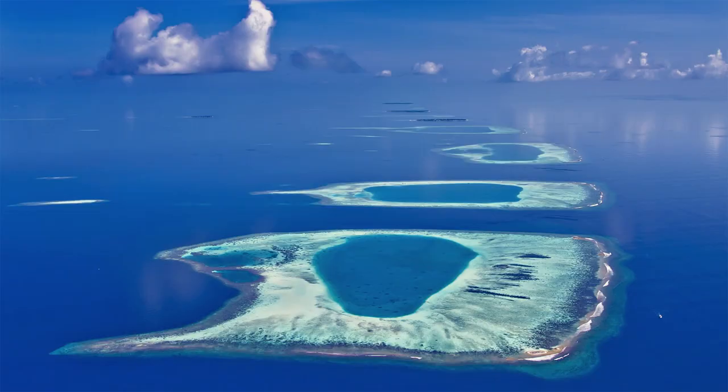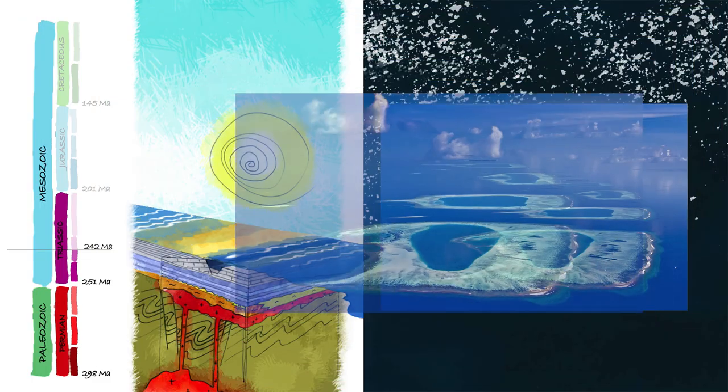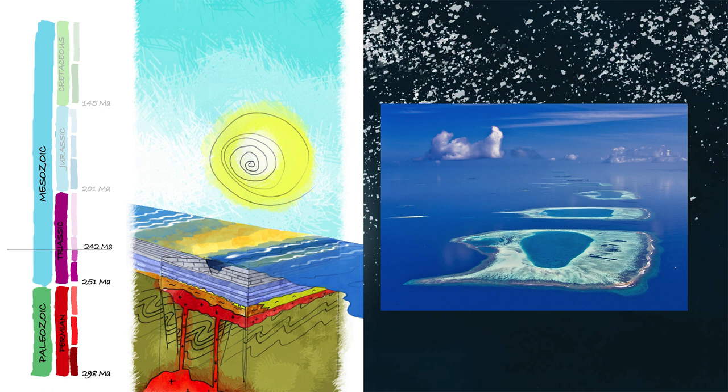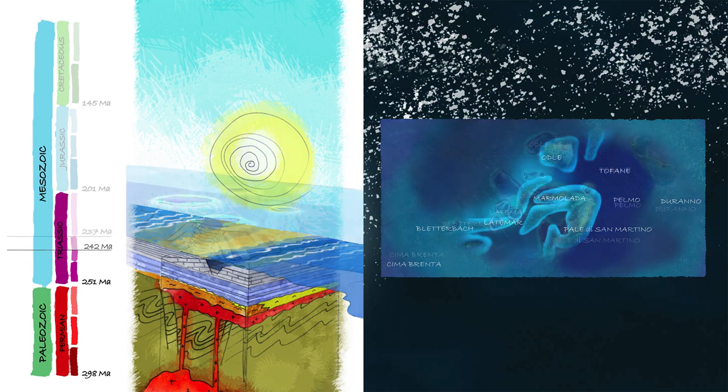They emerged as a cluster of islands separated by deep water, similar in appearance to the Maldives or the Bahamas, but with totally different environmental conditions from today.